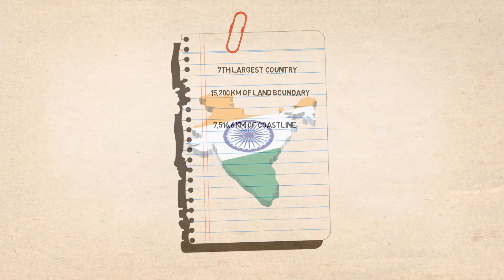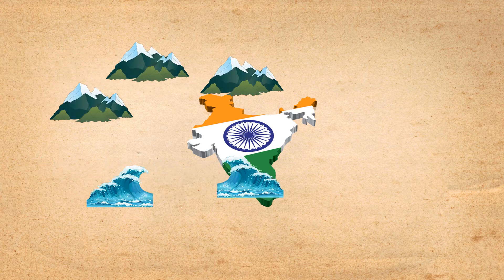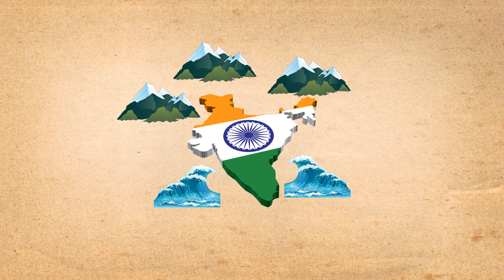India is bounded by the young fold mountains in the north-east, north, and north-west. South of about 22 degrees north latitude, it begins to taper and extend towards the Indian Ocean, dividing it into two seas — the Arabian Sea on the west and the Bay of Bengal in the east.